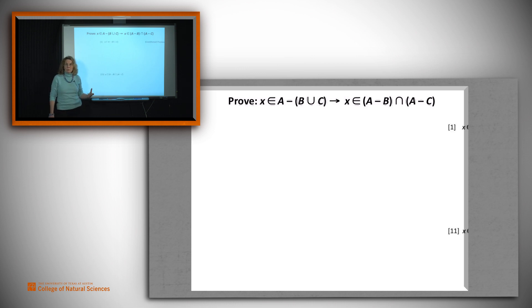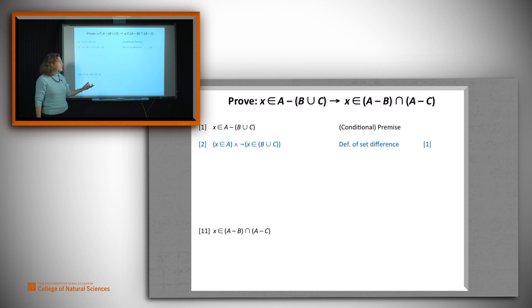All right. So that's what we want to prove. We start with our conditional premise. We want to end up with this. And then we'll be able to fill in the rest. So how do we do it? We use first the definitions. So the definition of set difference tells us that if x is an element of the difference between these two sets, then it's in A and it's not in B union C.